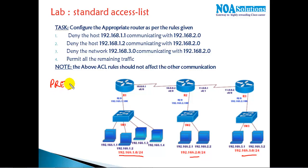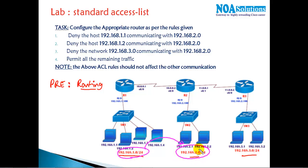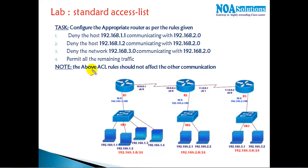The basic prerequisite for this lab is to have some routing configured — it can be RIP, EIGRP, or OSPF — just ensure that users on the 1-network can communicate with the 192.168.2 network and the 192.168.3 network. All three LAN users should be able to ping each other. That is the basic prerequisite.